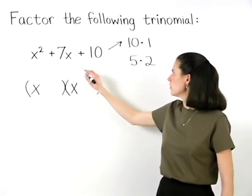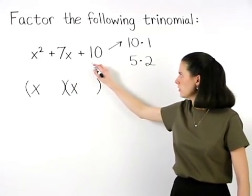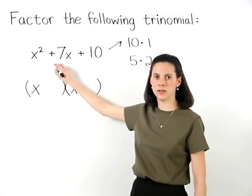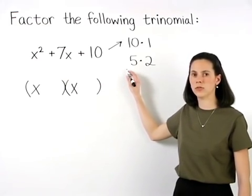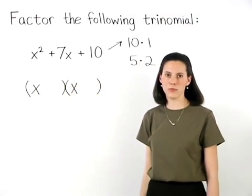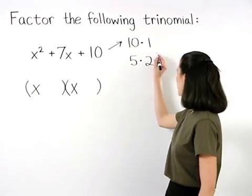The rule is, the factors of the constant term that we use must add together to equal the coefficient of our middle term. In other words, the factors of ten that we use must add up to seven. And the factors of ten that add to seven are five and two.